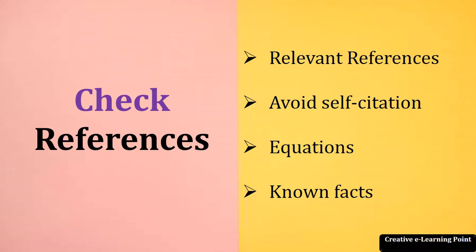Check references very carefully. You need to provide the relevant references in the thesis. Don't cite irrelevant references - it will create ambiguity and misunderstanding to the reader. Avoid self-citation unless and until it is necessary. You need to provide the reference for the equations or the known facts. Suppose you are indicating some standard values in your thesis, then you need to acknowledge from where you have taken those particular values or equations.